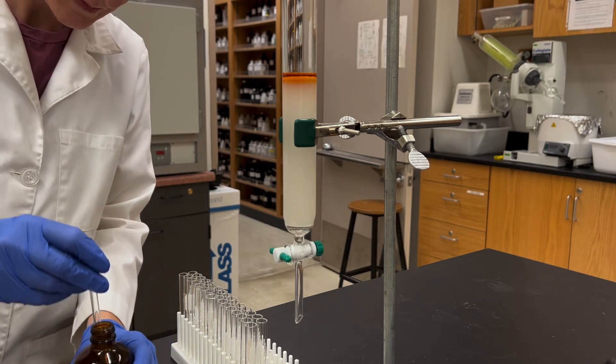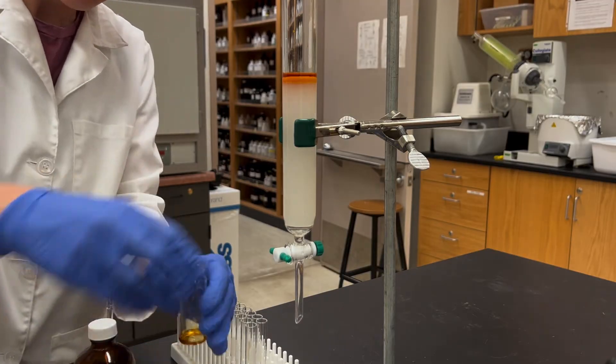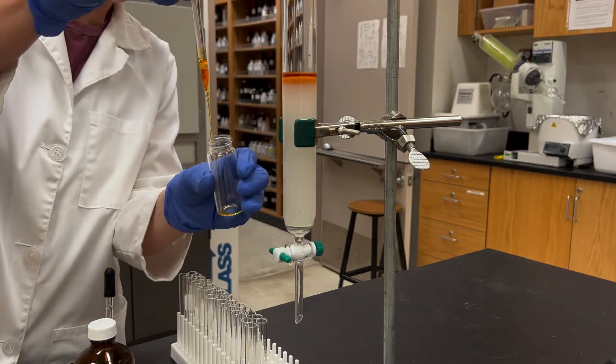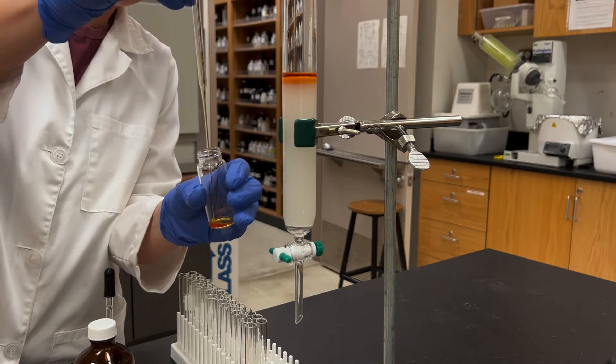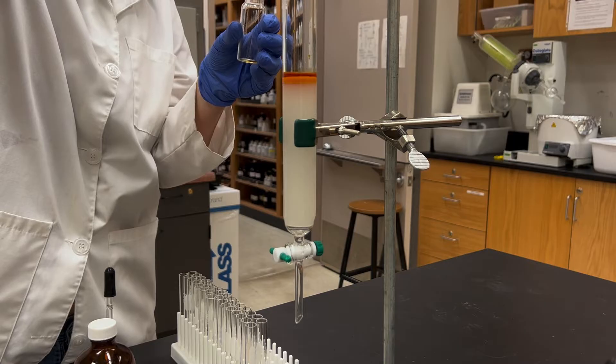After I've added my sample, I noticed that my vial still has quite a bit of residue in it so I'm going to do a rinse. I add a small amount more of dichloromethane and then use a pipette to add that rinse to the column as well.